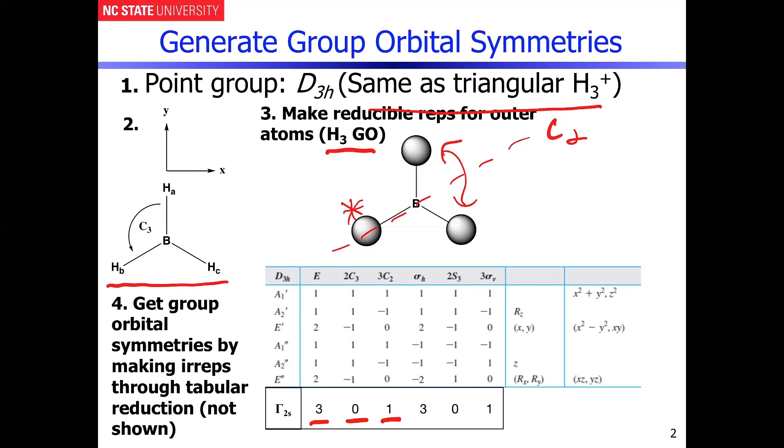If you apply the horizontal mirror plane operation to this, remember, the horizontal mirror plane is, in essence, the XY plane. So all the atoms stay fixed, and that gives you a character of 3.